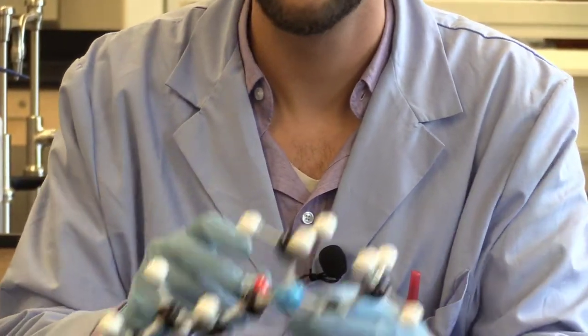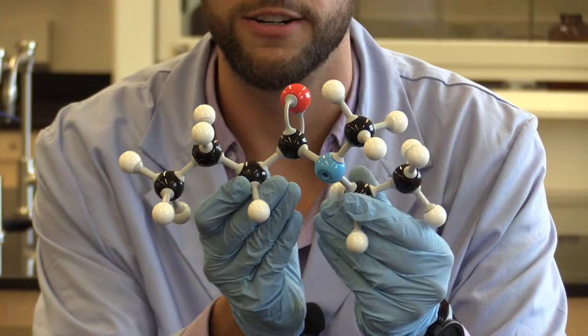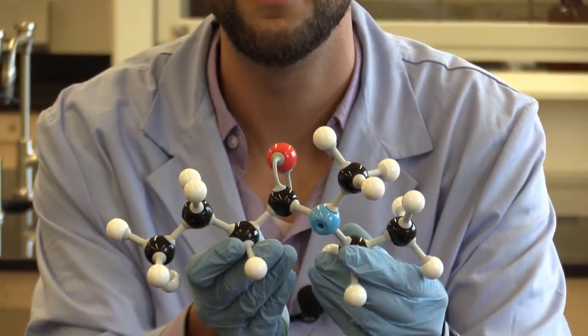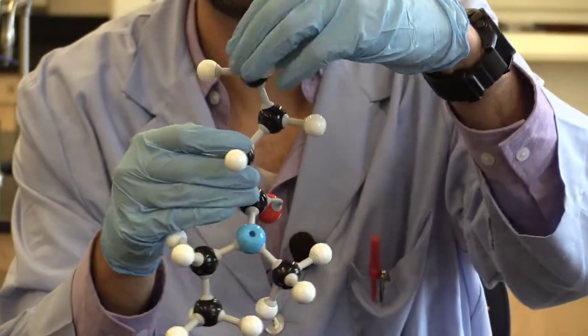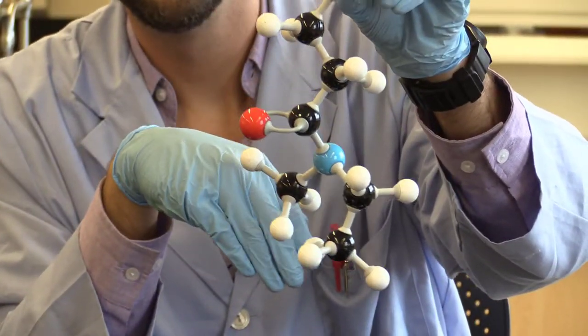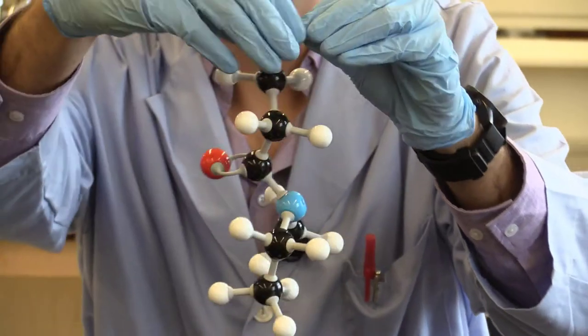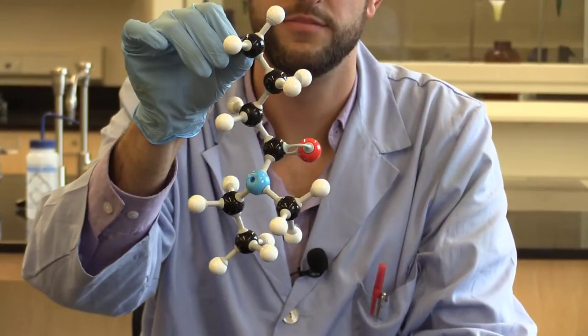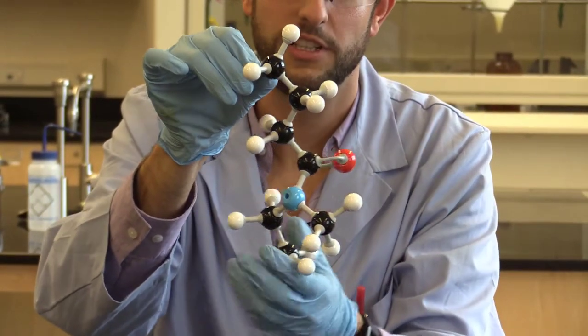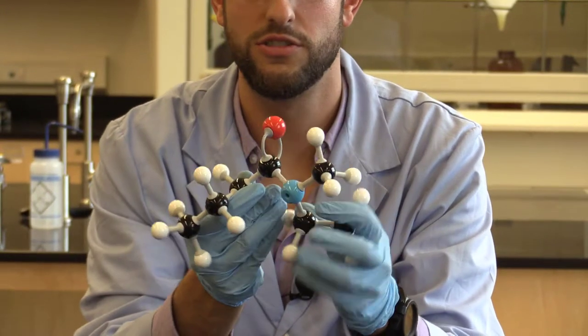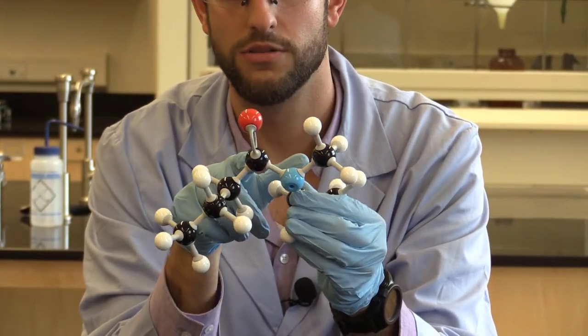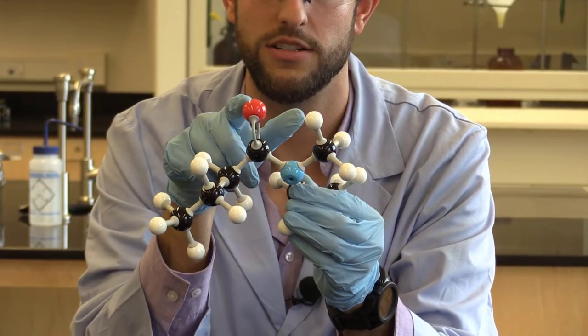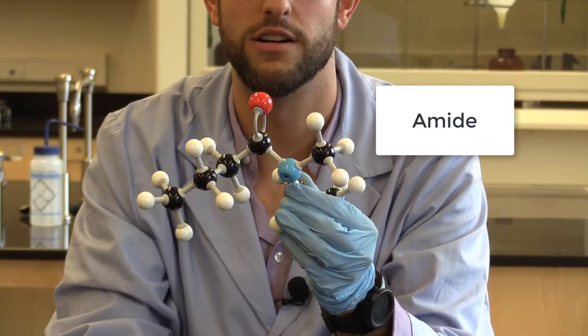Alright. What do you think of this big guy over here? So the functional group is our nitrogen bonded to a carbon and the carbon is double bonded to an oxygen. So this is our amide.